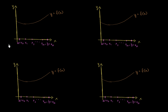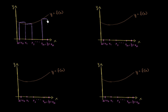In the last few videos, we've been approximating the area under the curve using rectangles, where the height of each rectangle was defined by the function evaluated at the left boundary. So this would have been the first rectangle, then the second rectangle would look something like this, and then we'd go all the way to the nth rectangle, which would look something like that.